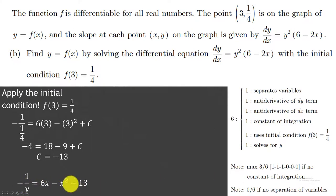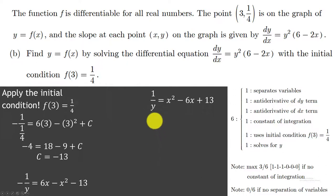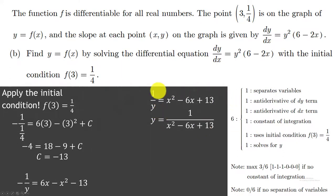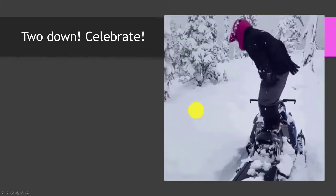We rewrite the equation with minus 13 in place of C. To solve for y, let's get rid of that negative by multiplying everything by negative 1 — change the sign of everything. So 1 over y equals x squared minus 6x plus 13. Then we flip both sides: y equals 1 over (x squared minus 6x plus 13). And we are done.